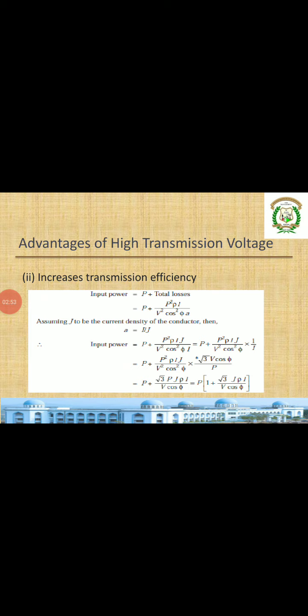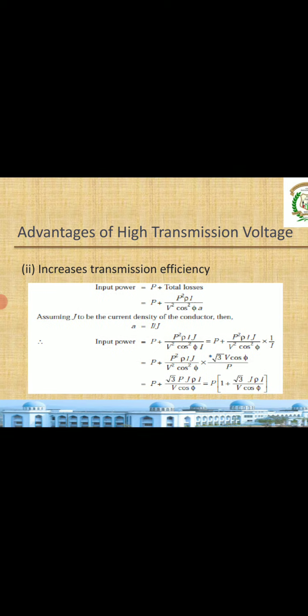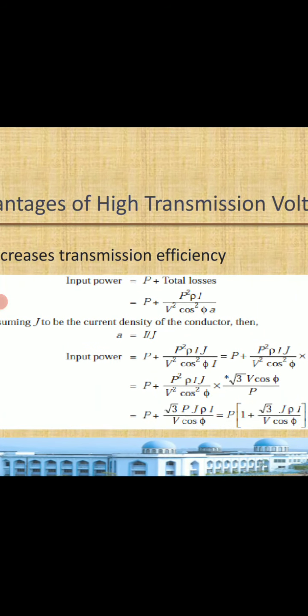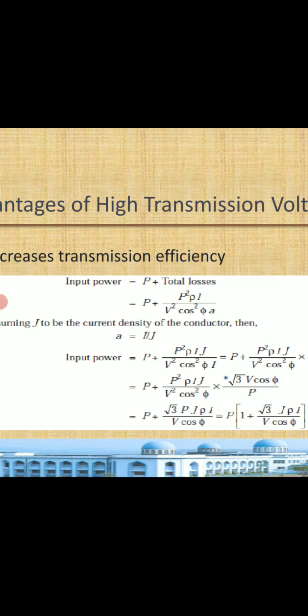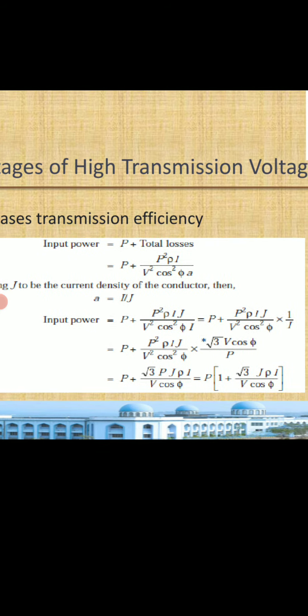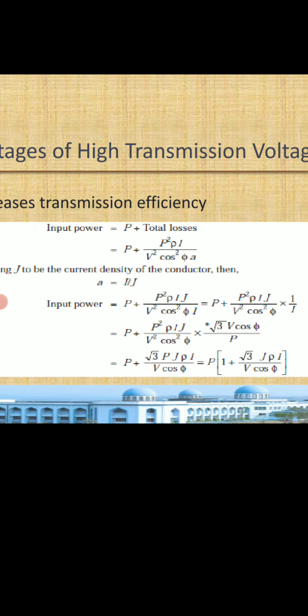The second advantage is that it increases transmission efficiency. Input power equals output power P plus total losses. Now introducing current density J, where J equals I divided by A, so A equals I divided by J. We can rewrite the input power equation replacing A with I divided by J — since A is in the denominator, J comes to the numerator and I remains in the denominator.